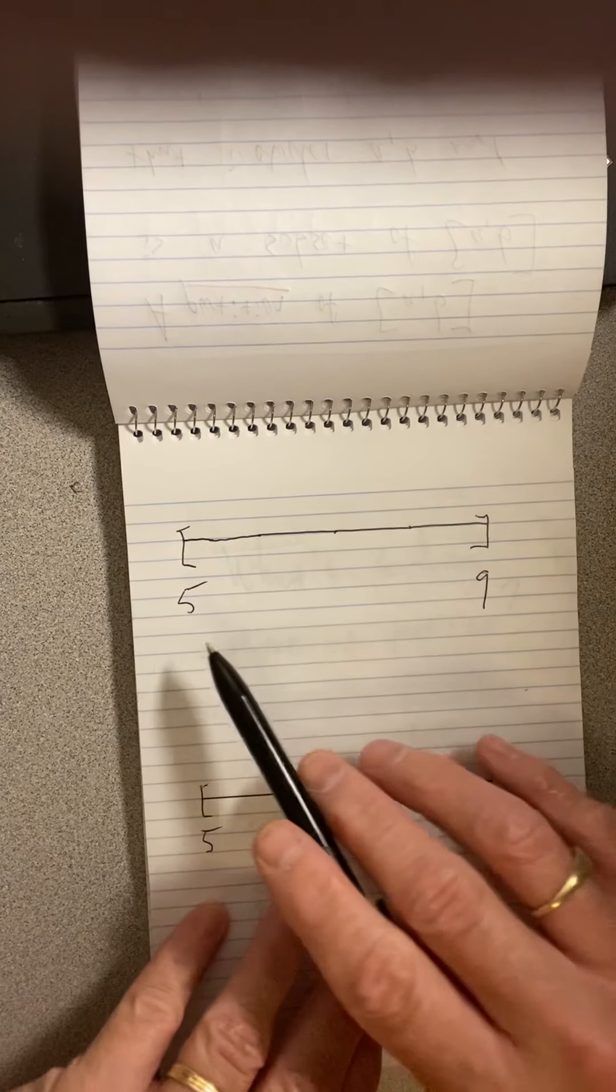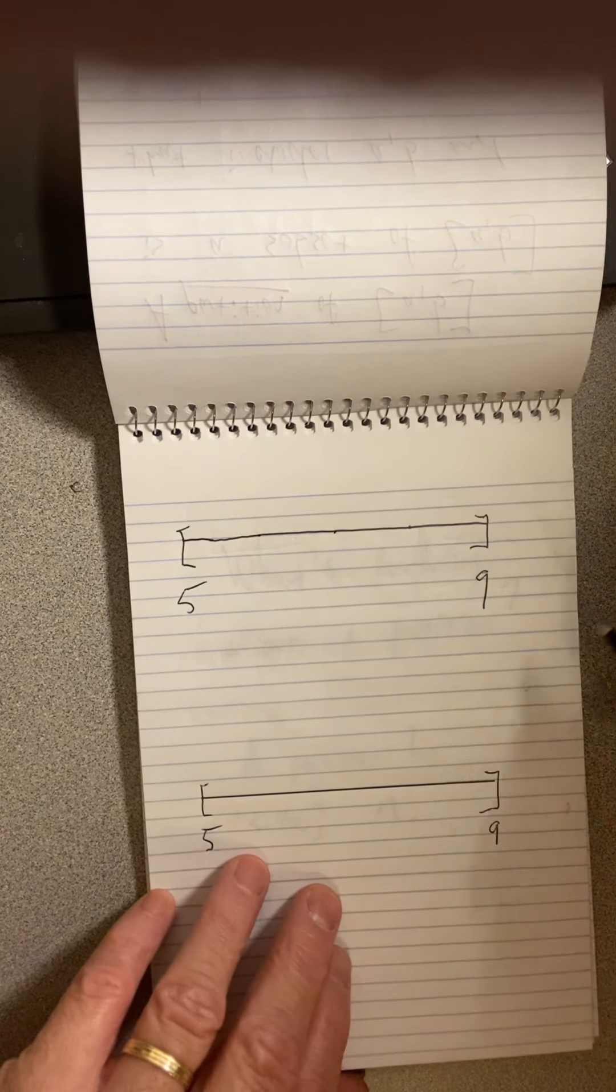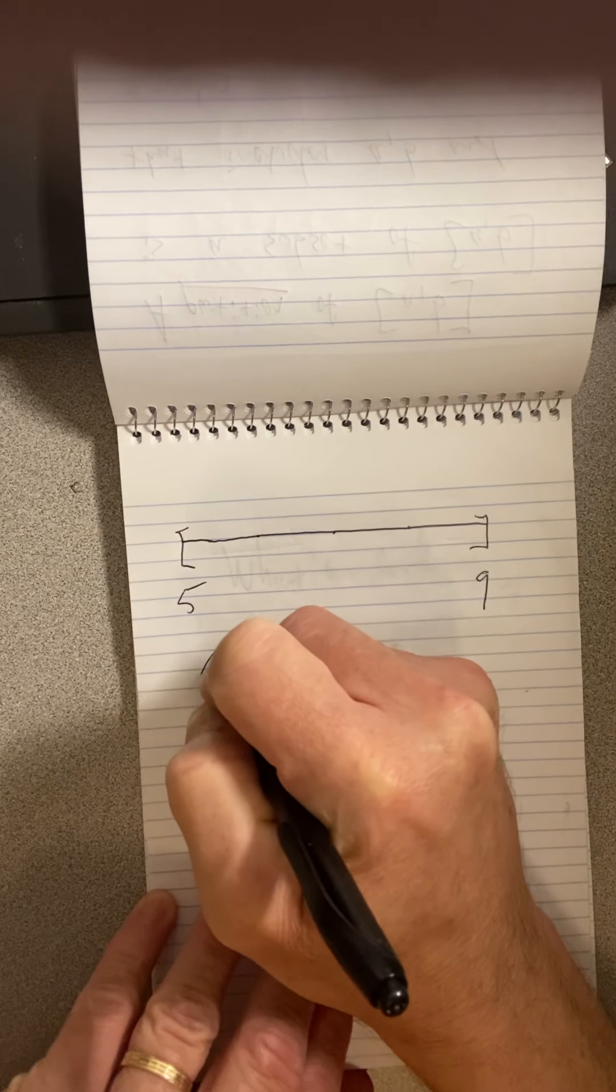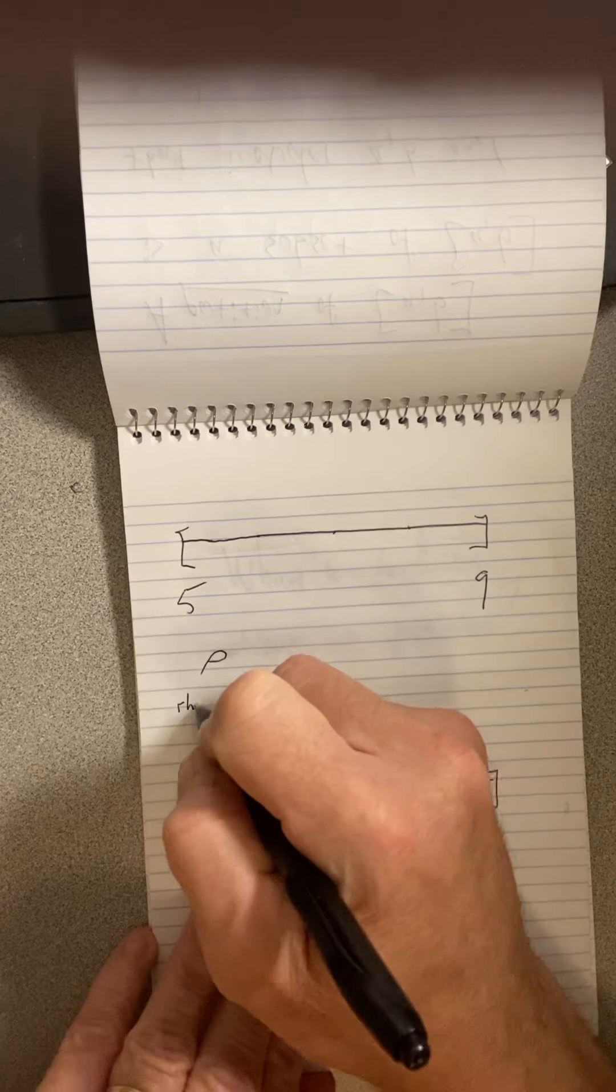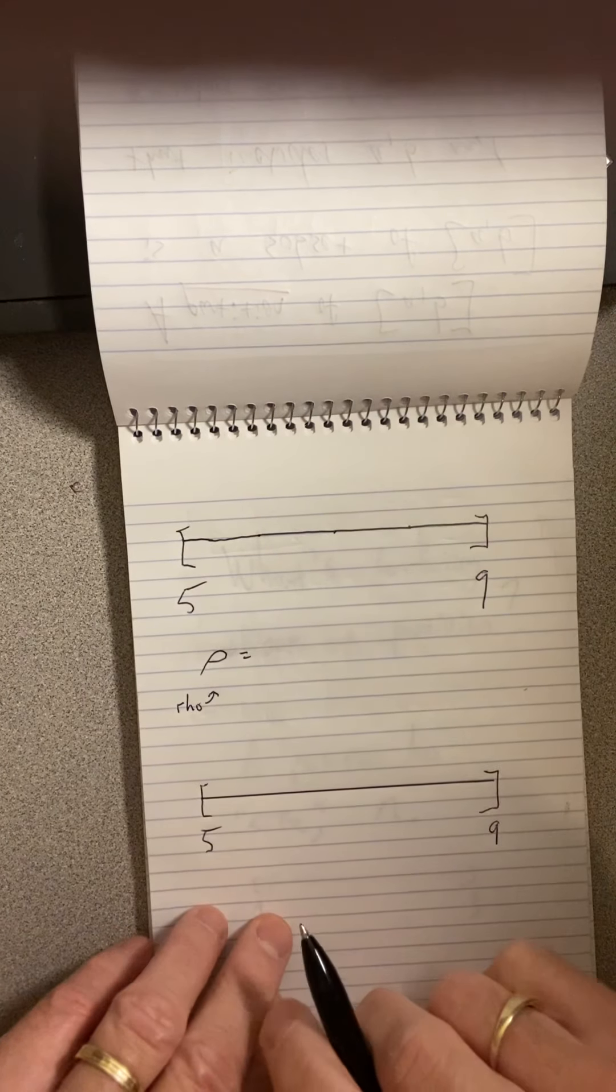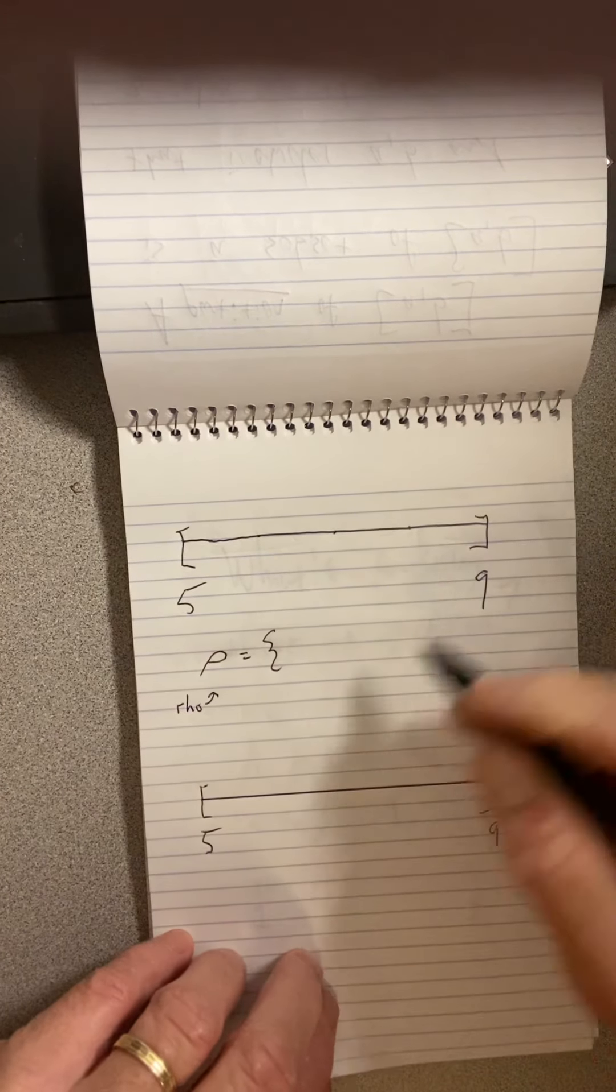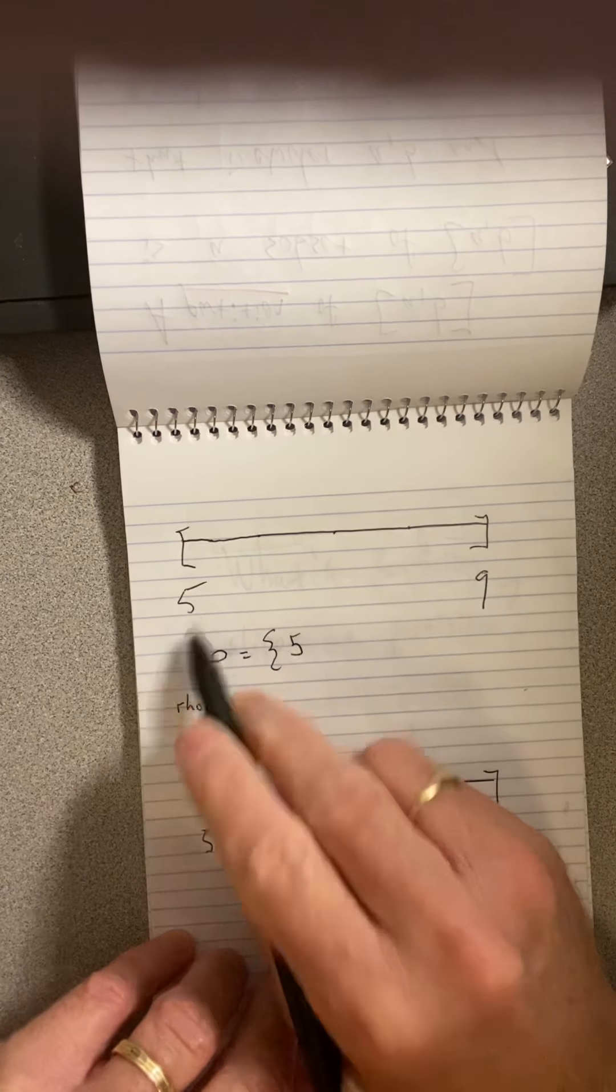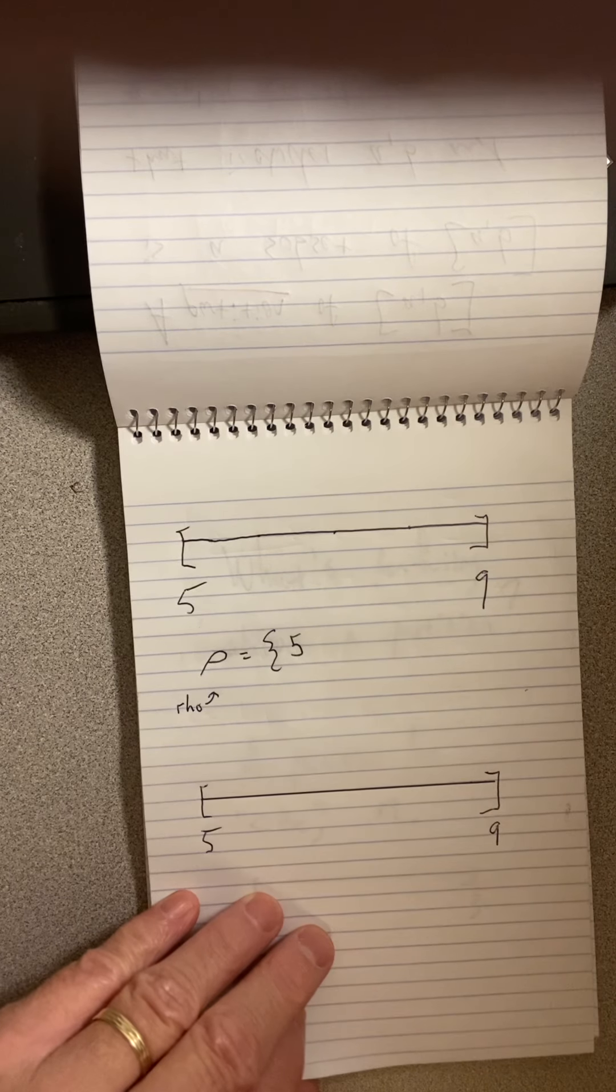Here I have an interval from 5 to 9. A partition, we use the Greek letter rho, it looks like a P but it's the Greek letter rho to represent a partition frequently, is a subset of this interval. I just pick numbers in this interval, but I must pick 5. Five has to be in the set, and nine must be in the set for it to be a partition.